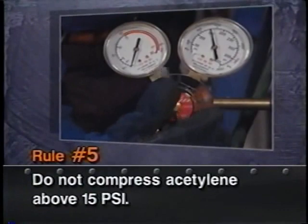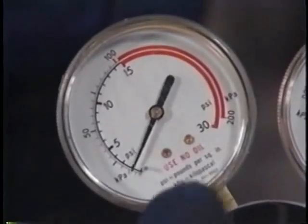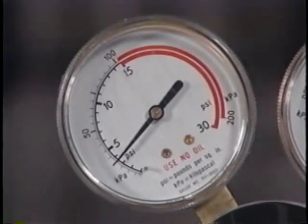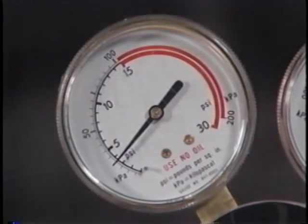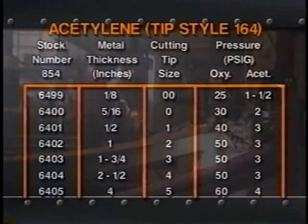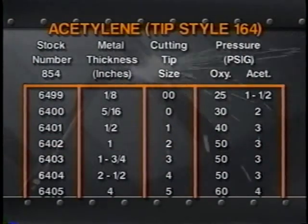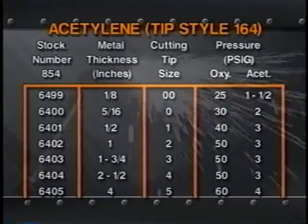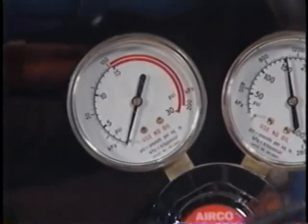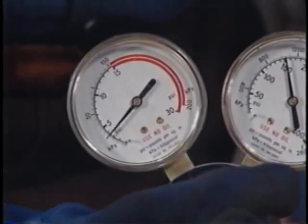Rule number five: do not use compressed acetylene in a free state at pressures higher than 15 pounds per square inch. Acetylene is a man-made gas and it's very unstable. According to chemists, acetylene can be handled safely in the pressure range of 0 to 15 PSI with normal precautions; however, above 15 PSI, acetylene is likely to explode by itself. Seven pounds per square inch of acetylene pressure is all that is needed to cut 14-inch steel, and it is a rare situation which requires more than 10 PSI. Operating up in the 15 PSI range for normal work wastes gas and may put you in a dangerous situation.